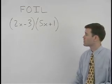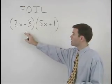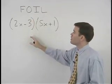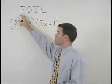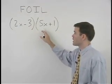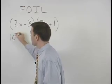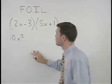So to multiply these two binomials together, let's use the FOIL method. The product of the first terms is 2x times 5x or 10x squared, plus the